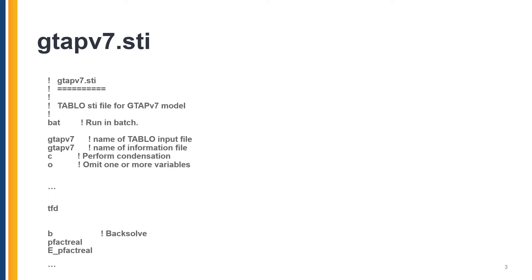For example, here I've copied and pasted the contents of the GTAP v7.sti file. I'm basically indicating that I'll be running this condensation as a batch file. I need to provide the name of the model — GTAP v7.tab without extension — then specify that this is a condensation task. The very first command is O for omitting some variables, and you will see some variables listed here.